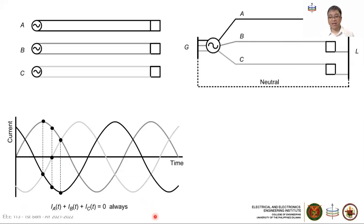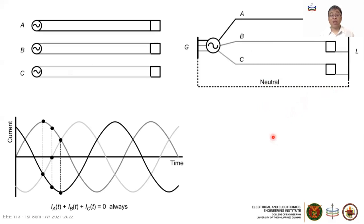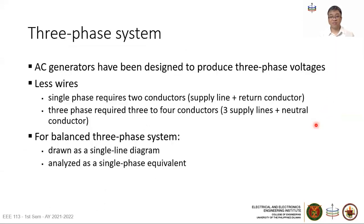The current flowing through the neutral wire is the sum of IA + IB + IC, and that equals zero. So the current through the neutral wire is zero, and we can remove this neutral wire because no current flows through it. From six wires to four wires, it can even be reduced to three wires. Wires are expensive and heavy, and more wires require bigger, stronger towers to maintain clearance and carry the weight. The three-phase system thus allows us to use fewer wires.